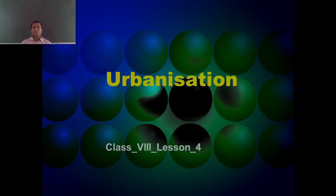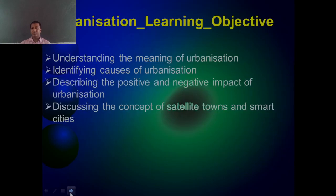Dear students, now let's move to urbanization. First of all, we are going to deal with the learning objectives of this chapter. In this chapter we have to learn: understanding the meaning of urbanization, identifying causes of urbanization, describing the positive and negative impact of urbanization, and discussing the concept of satellite towns and smart cities. These days, smart cities is a buzzword, so we are going to discuss this topic in this chapter also.